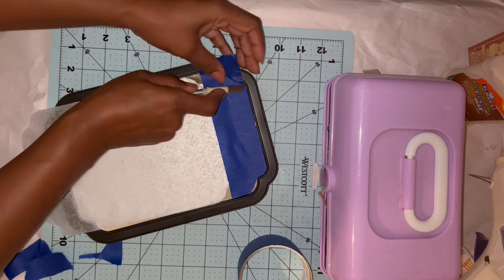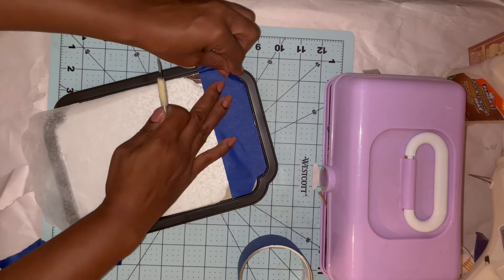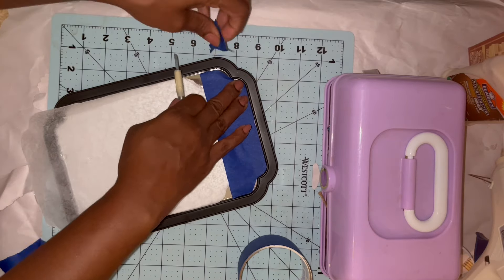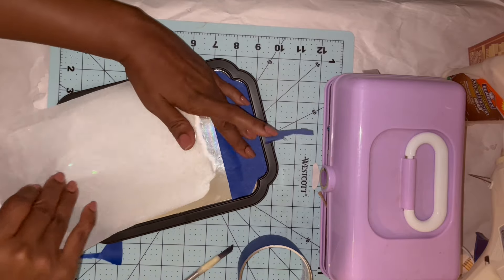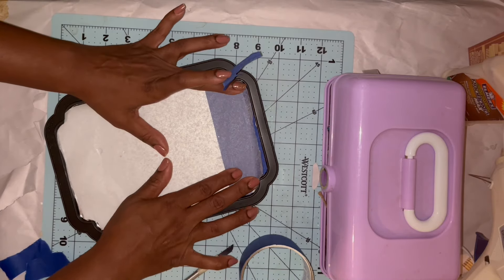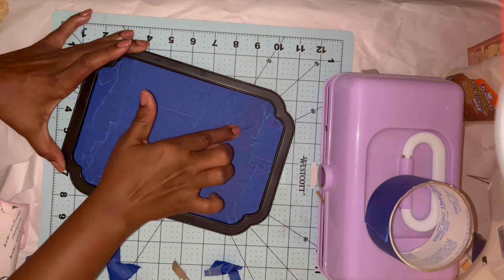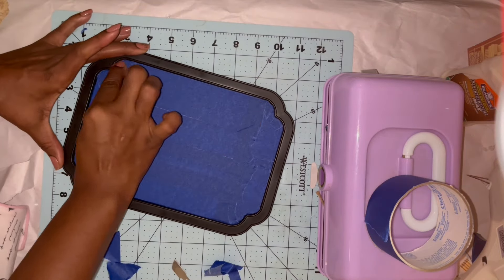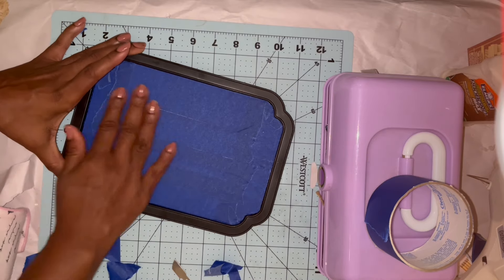I'm making sure that I have the exact shape of the mirror cut so that none of my mirror is exposed once I start to spray paint. I'm just making sure that all of my tape is pressed down and there aren't any areas where any of the paint can seep through onto the mirror.